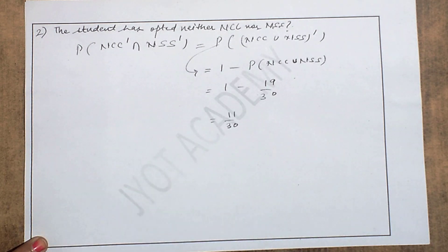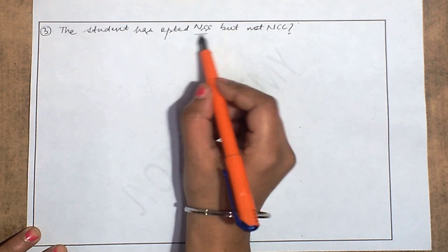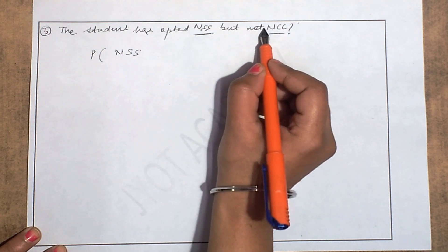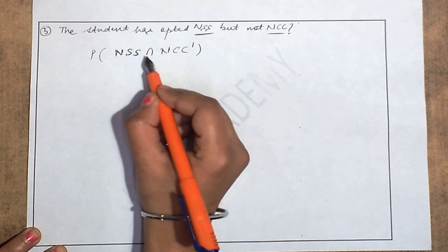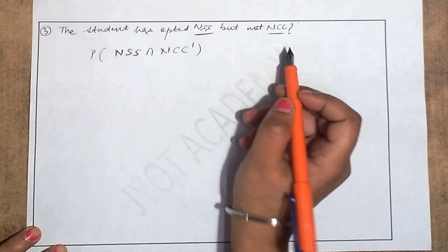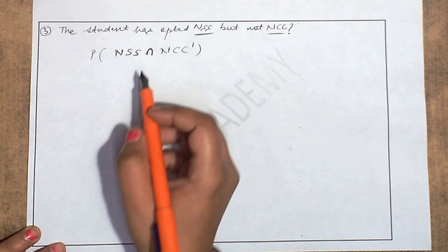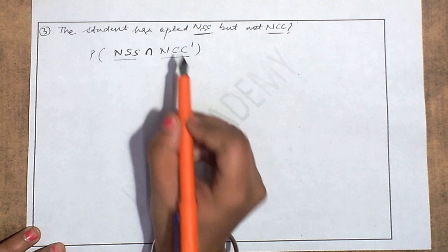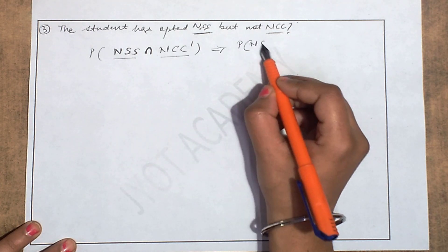Third part: the student has opted for NSS but not NCC. So we need P(NSS ∩ NCC'). Only 'not NCC' is applied; NSS has no 'not'. Intersection is used because we need both conditions — the student must be in NSS and must not be in NCC.